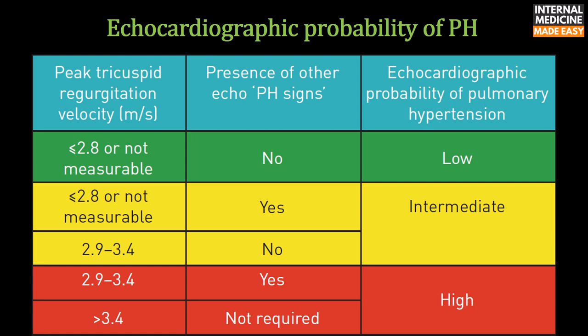Echocardiographic probability of pulmonary hypertension: if peak tricuspid regurgitation velocity is ≤2.8 m/s or not measurable, probability is low without other echo signs and intermediate with other echo signs. If velocity is 2.9–3.4 m/s, probability is intermediate without other signs and high with other signs. If velocity is more than 3.4 m/s, probability is high regardless of other echo signs.